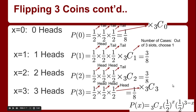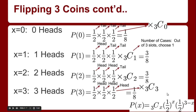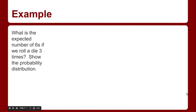The first homework question asks what role that part of the formula plays — and it just tells you the number of cases. Out of the 3 slots, we choose x of them. It's important to look at another example, because with coins the probability of heads equals the probability of tails. So let's look at the expected number of sixes if we roll a die three times.